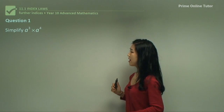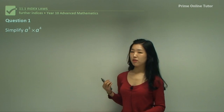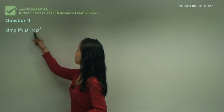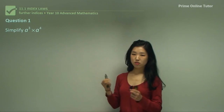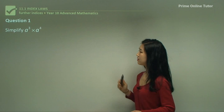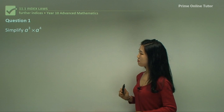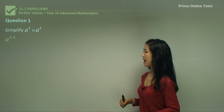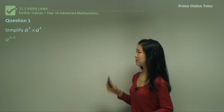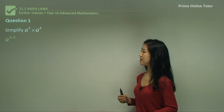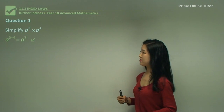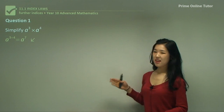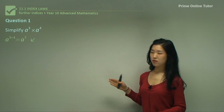Starting with question one. Always make sure when doing these questions that the base is the same — if they're not the same, we can't do the addition or subtraction of the indices. So we know the base is both a, and since we're multiplying, we add the indices: 3 plus 4 gives us a to the power of 7.